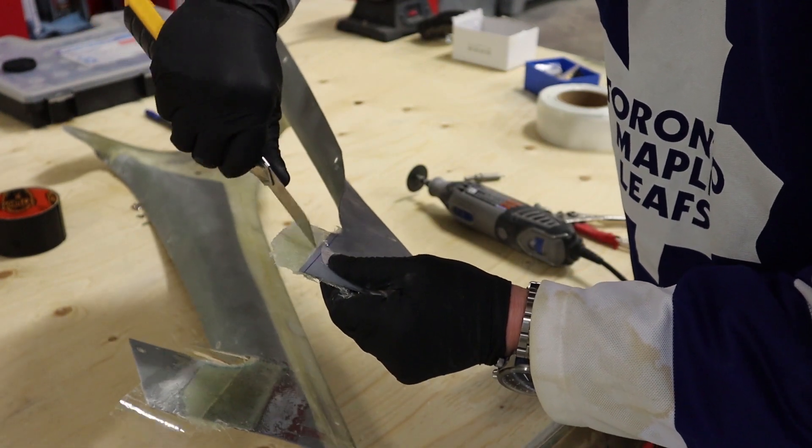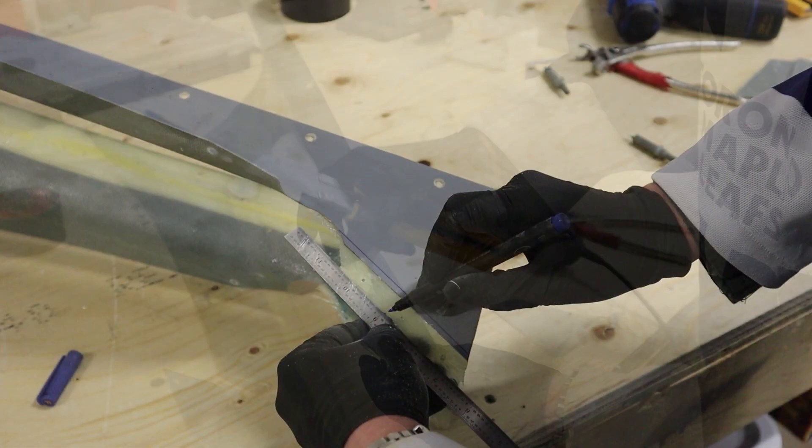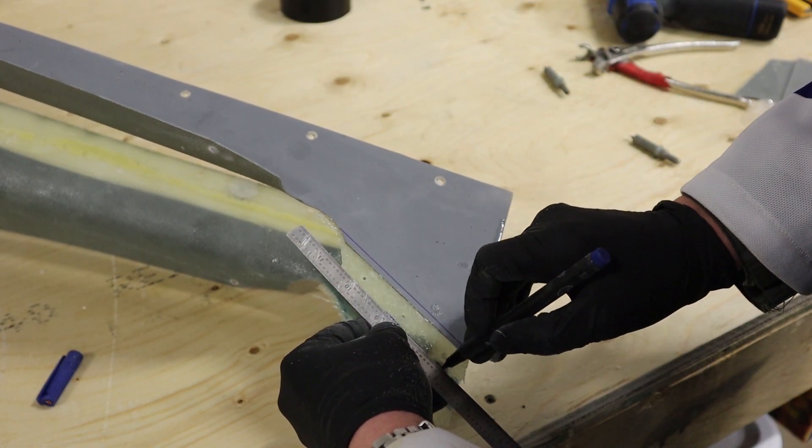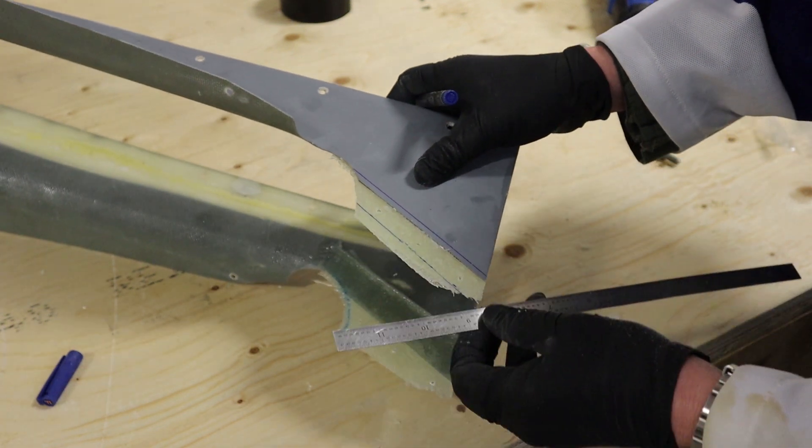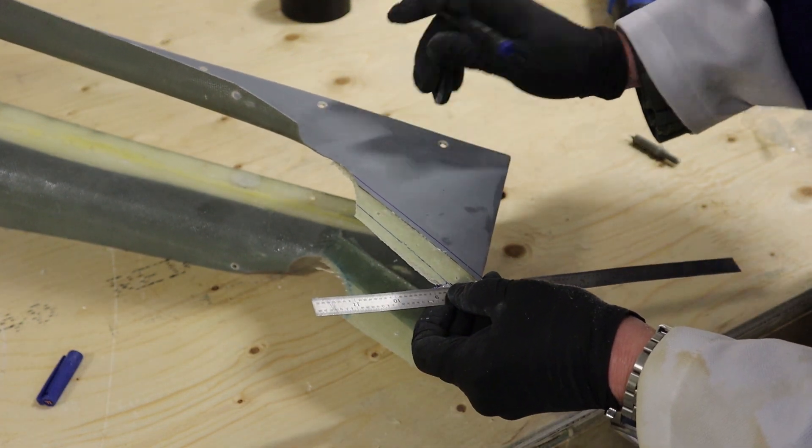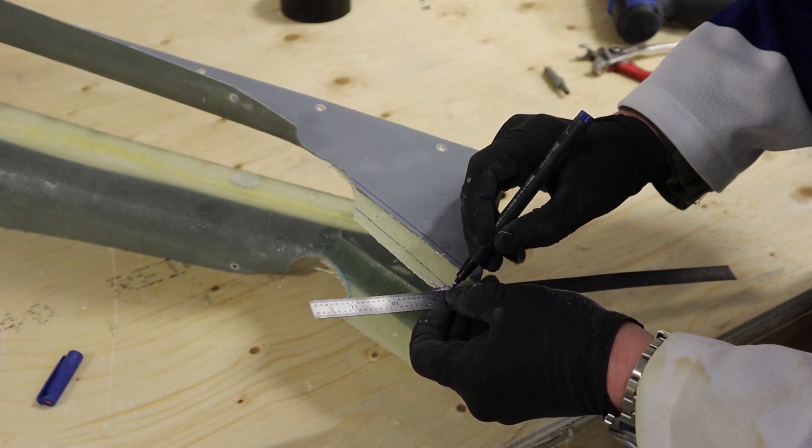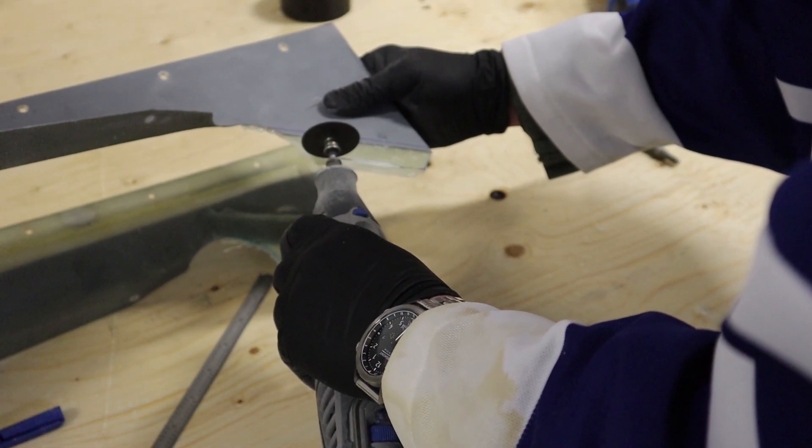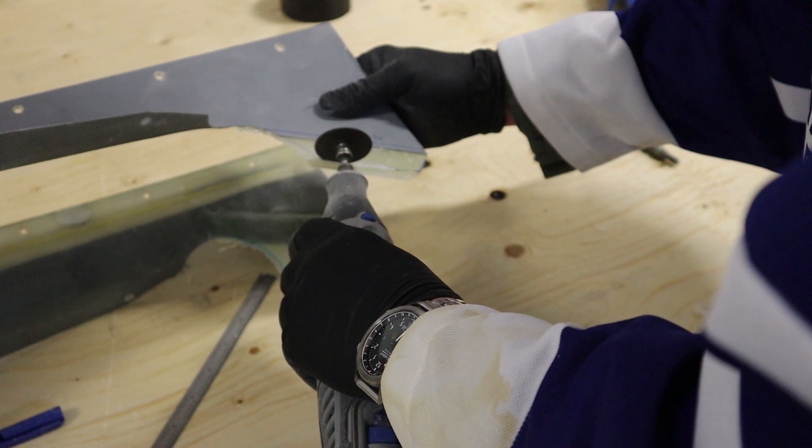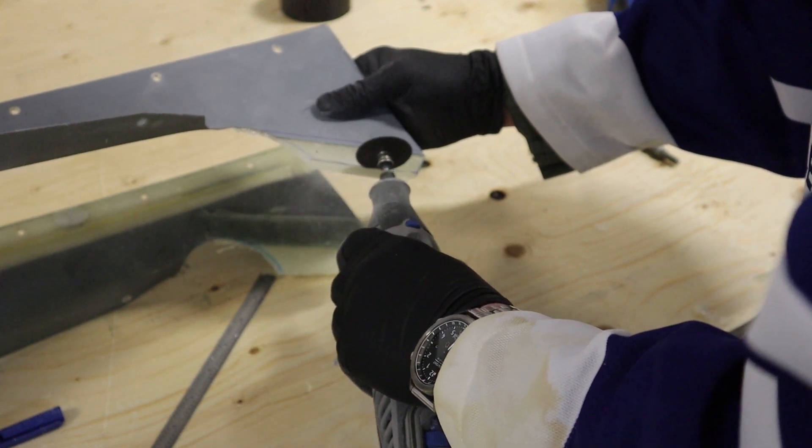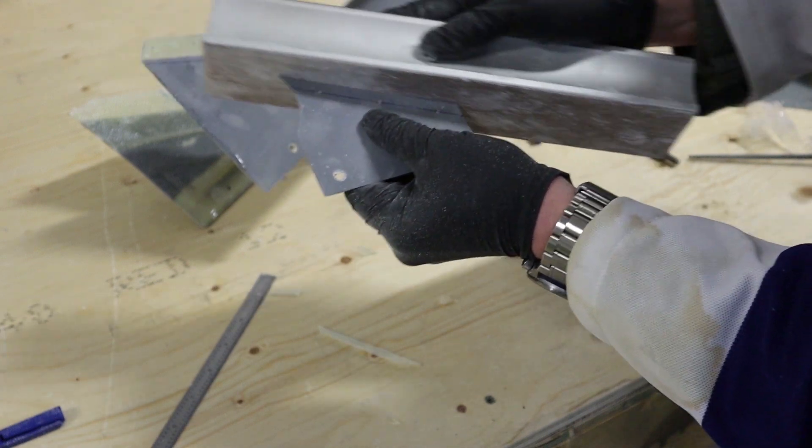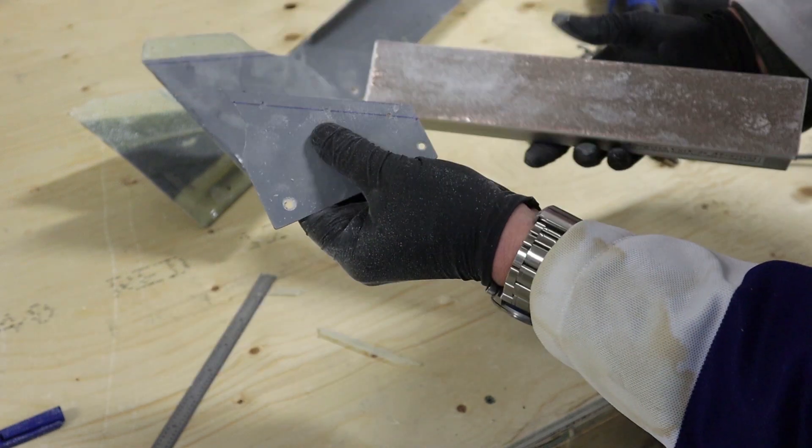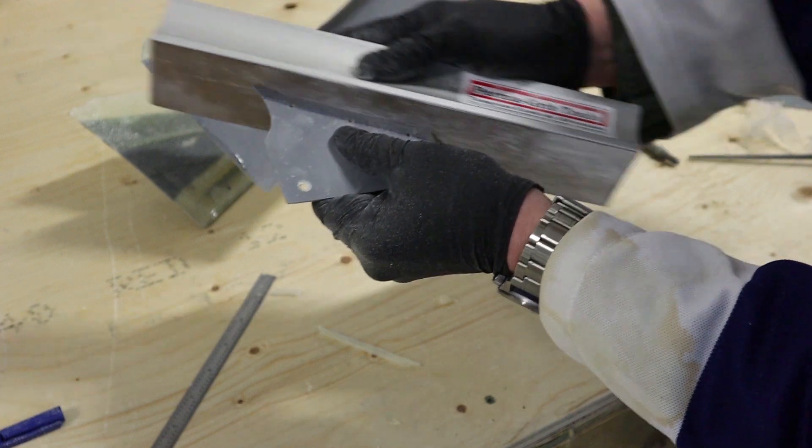You might need an exacto knife to get rid of some of the residue. Trim off the fiberglass flange as required, leaving plenty of room for your nut plates. Anytime you dremel something, the edge is probably not going to be perfectly straight, so get yourself a sanding block to make it look nice and finished.